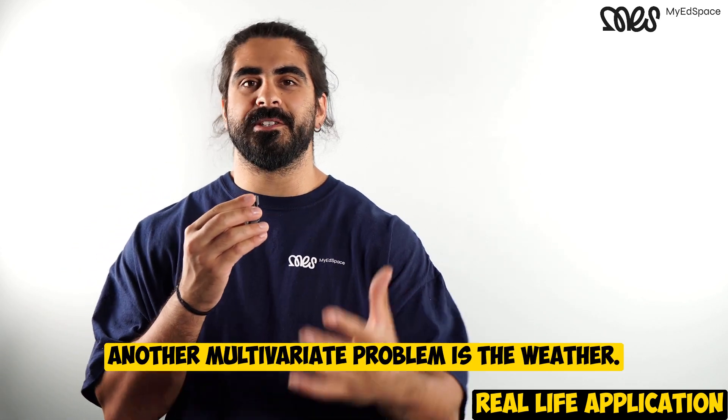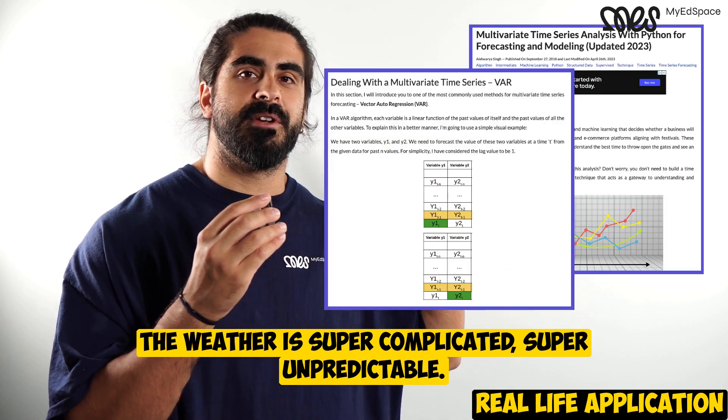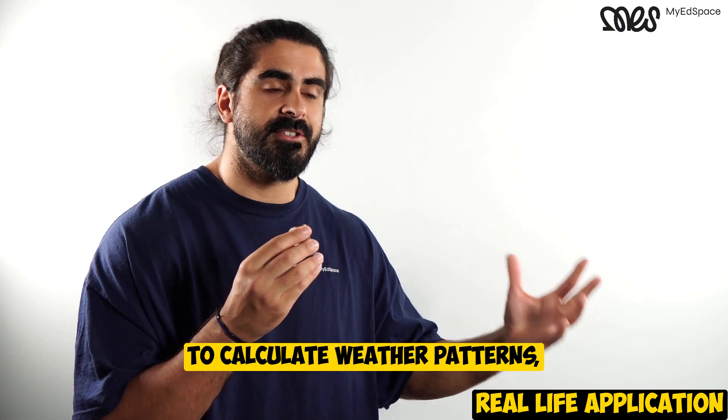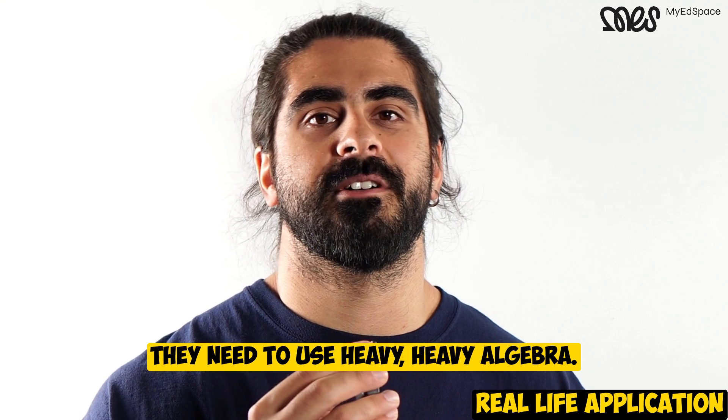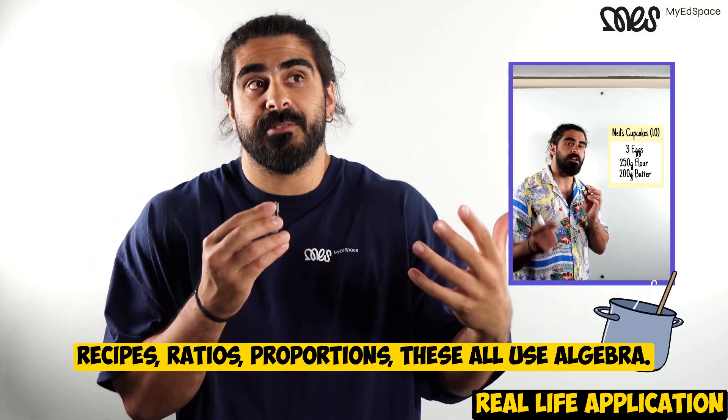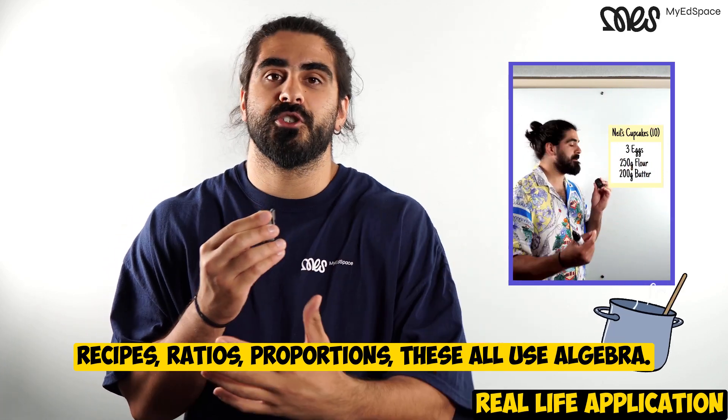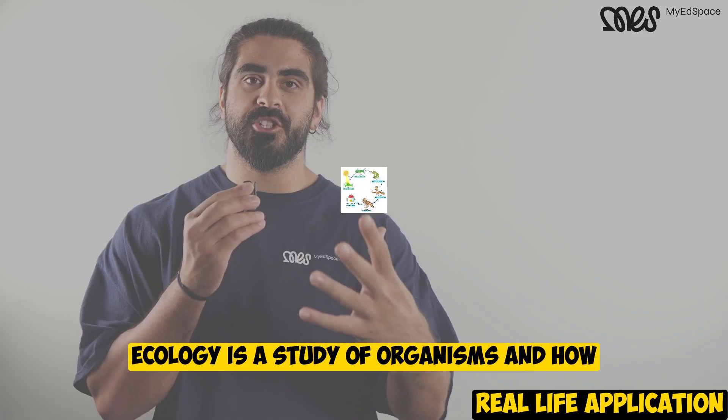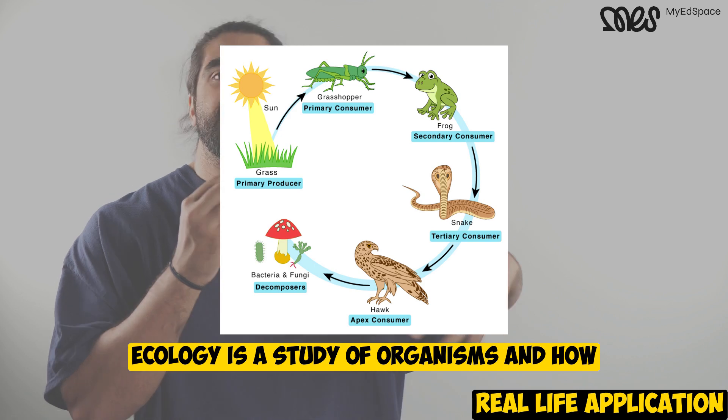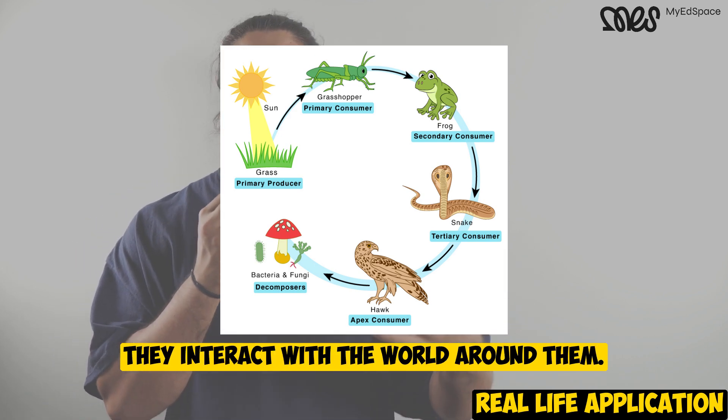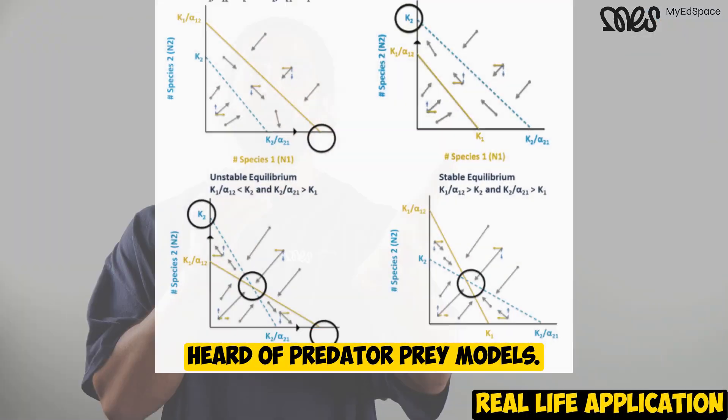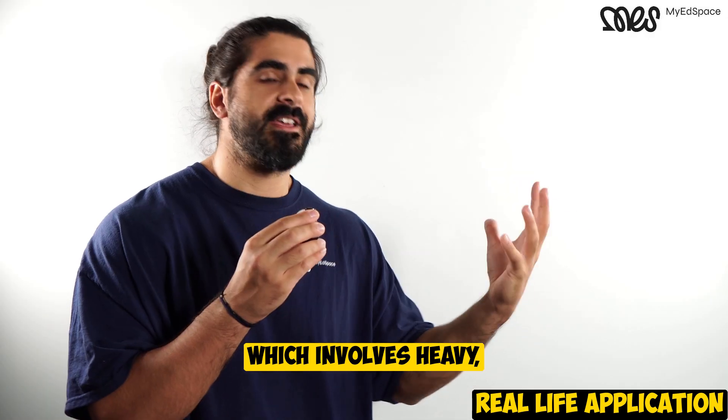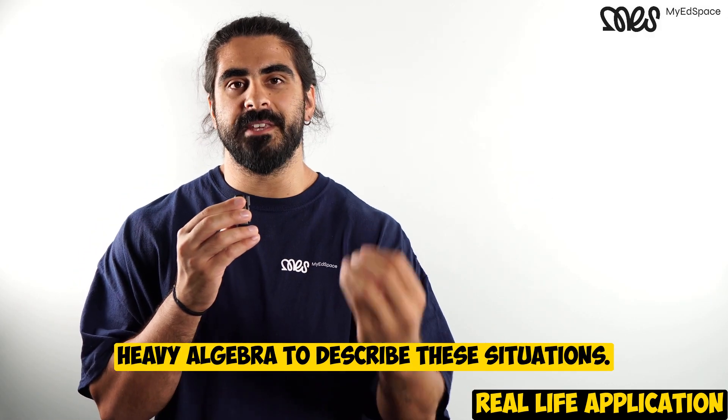Another multivariable problem is the weather. The weather is super complicated, super unpredictable, so in order for mathematicians to calculate weather patterns, they need to use heavy algebra. Something a little bit more simple - recipes, ratios, proportions, these all use algebra. One more for you guys is ecology, the study of organisms and how they interact with the world around them. For example, you might have heard of predator-prey models. Mathematicians here use differential equations, which involves heavy algebra, to describe these situations.